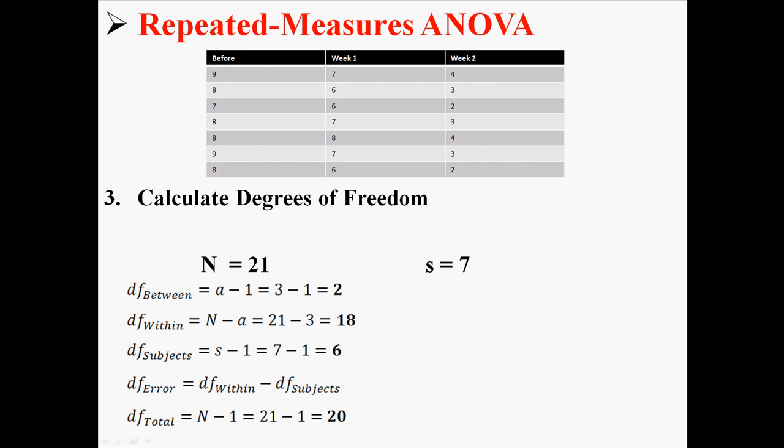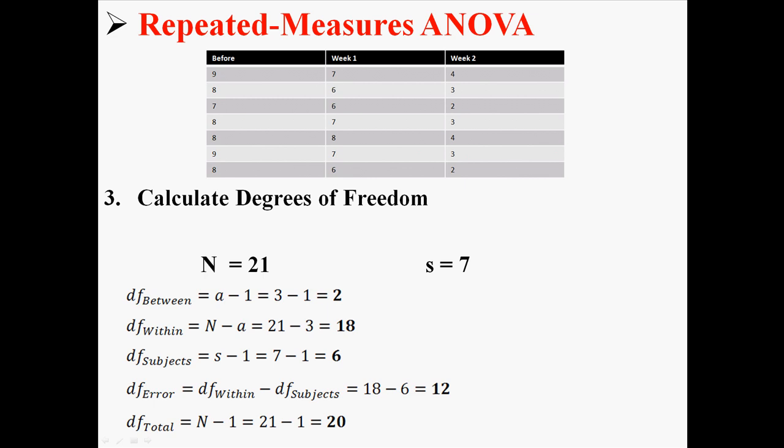So I can find between, within, subjects, and total. Between is 2. Within is 18. Subjects is 6. And total is 20. And now that I know all these things, I can find error. Error is 12.